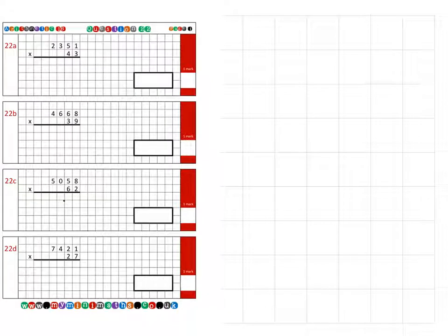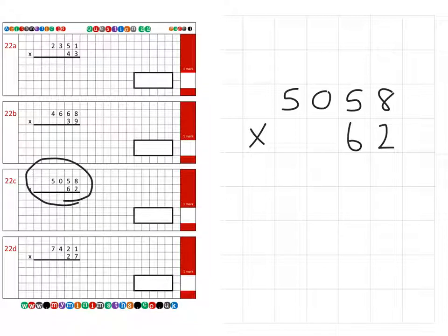Next is question 22c. That's 5,058 into the squares times 62. Again, we're going to look at the units column to begin with. Don't forget my line. We're going to look at units. So that's 2 times 8 is 16. 2 times 5 is 10 plus the 1 is 11. 2 times 0 is 0. Don't make a common mistake of thinking it's 2. 2 times 0 is 0, so we just place the 1 that we carried over. 2 times 5 is 10. That's the units complete.